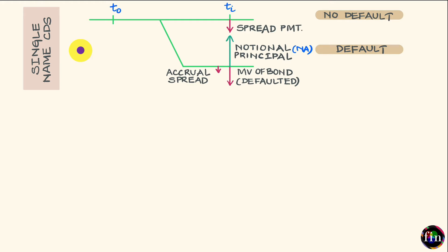Let's say you are an investor and you have bought $100 million face value worth of bonds issued by ABC company. Given the size of this position, you are quite concerned that if ABC company were to default on these bonds, you will be in for a huge loss. What you can do is protect yourself against these losses by entering into a CDS with ABC company as the reference entity.